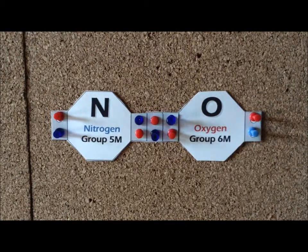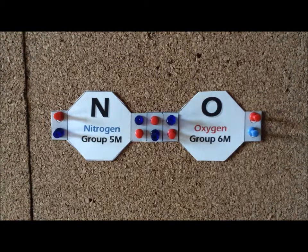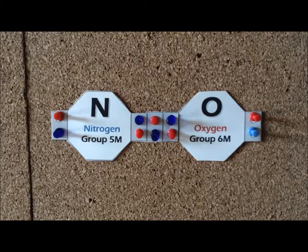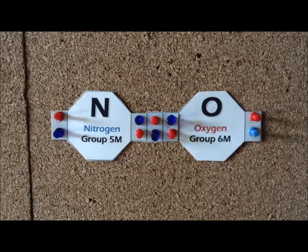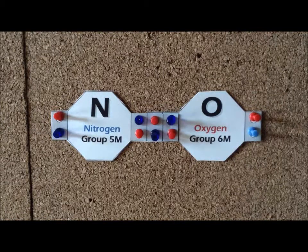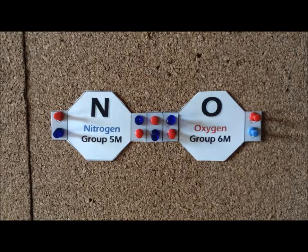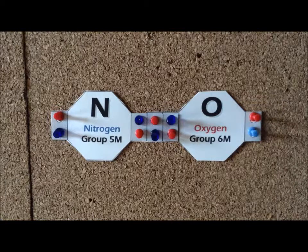The nitrosonium ion has the chemical formula NO⁺. The nitrogen contributes 5 valence electrons and the oxygen contributes 6, for a total of 11 valence electrons. But then we notice that the ion has a +1 charge, so we remove one of the valence electrons to give us a total of 10.